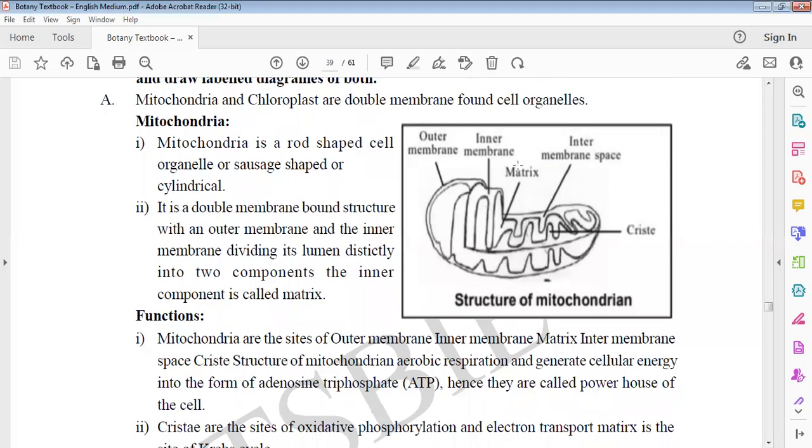Mitochondria and chloroplast are called double membrane-bounded cell organelles. Mitochondria has a rod shape, sausage shape, cylindrical shape. This is double membrane-bounded - outer membrane, inner membrane, perimitochondrial space, matrix, and inner membrane foldings.